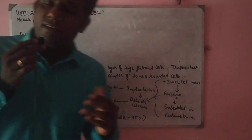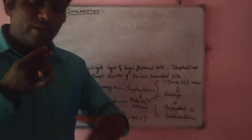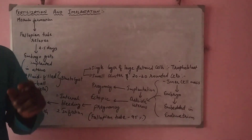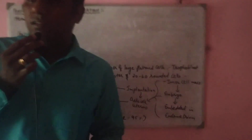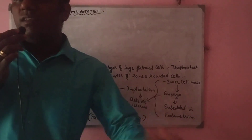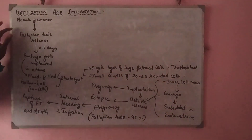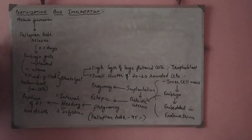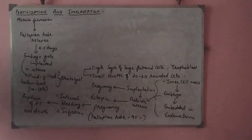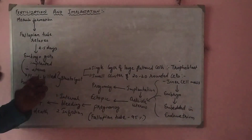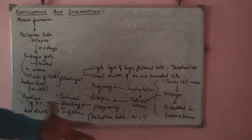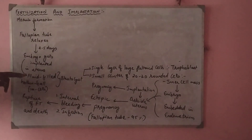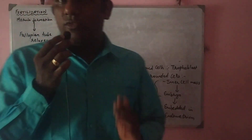So what happens after that? How does this morula develop further and how does this embryo — the zygote — get settled in the uterus in a process called implantation? We'll be seeing that in this video. Once the morula is formed, the fallopian tube senses the morula formation and slowly starts to relax. When it relaxes, this morula starts traveling from the fallopian tube to the uterus, and this takes around 4 to 5 days.